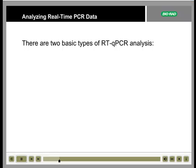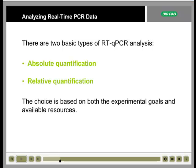When analyzing real-time data, there are two methods to choose from: absolute quantification and relative quantification. The choice of method is based largely on the experimental goals and on available resources.